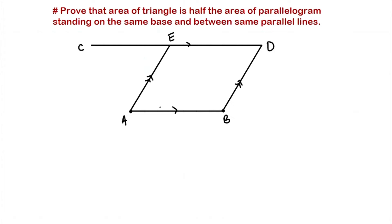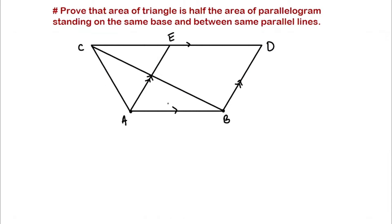Now we are going to make a triangle on the same base AB and between the same parallel lines CD and AB. Let's connect A with C and connect C with B. So now we have triangle ABC standing on base AB, also between the parallel lines CD and AB. Our theorem tells us the area of this triangle is going to be half the area of this parallelogram.